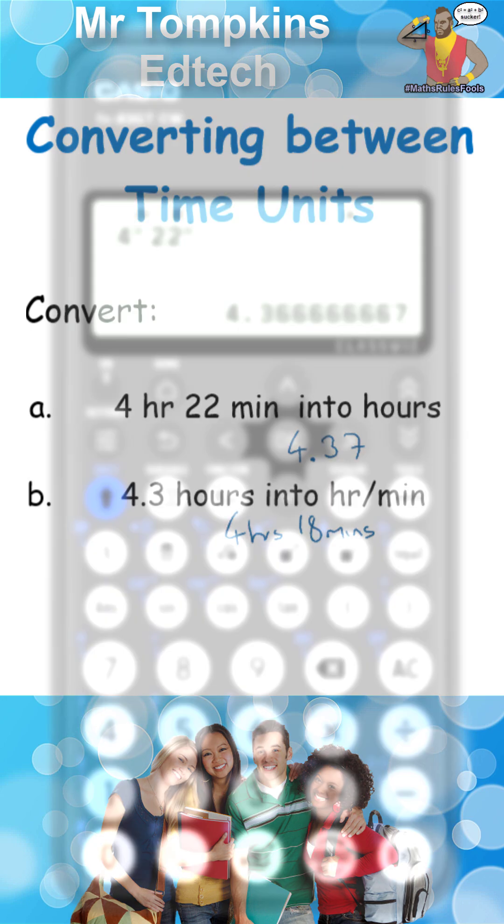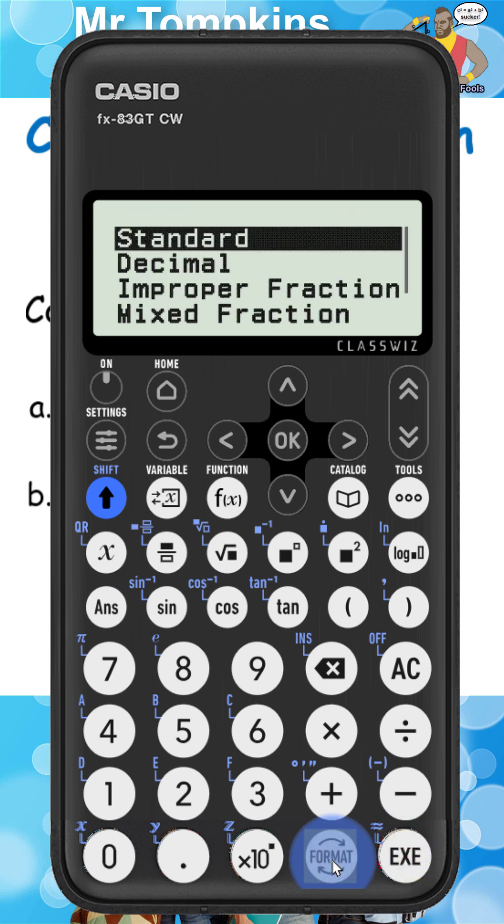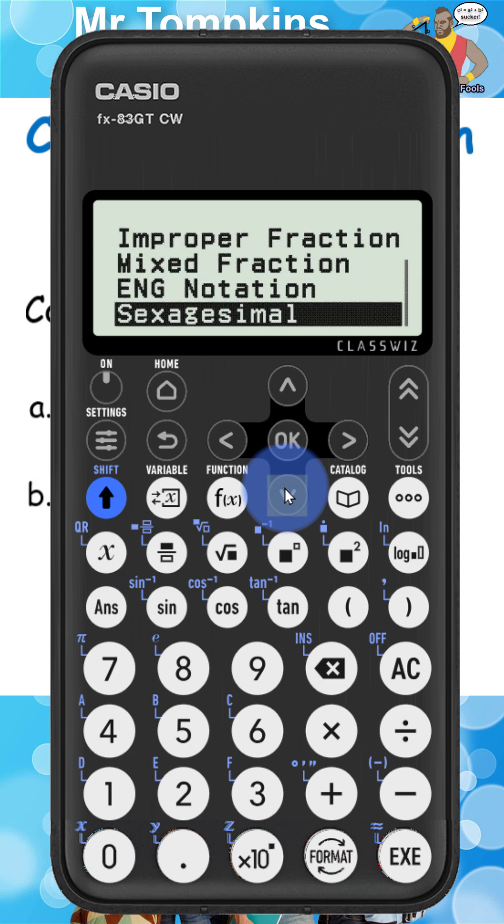On the new calculator, the process is similar. I'm going to press the 4.3. I'm going to press the execute button and this time I'm going to press the format key and I'm going to go down to sexagesimal mode. Interesting name.